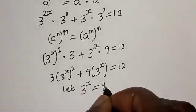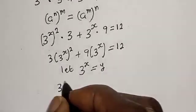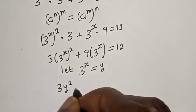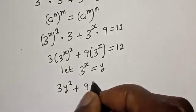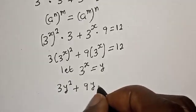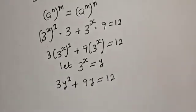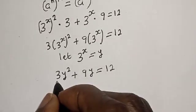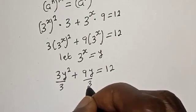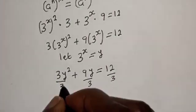Let 3 raised to power s equal to y. So we have 3y squared plus 9y is equal to 12. Now we can reduce this — let's divide all terms by 3.